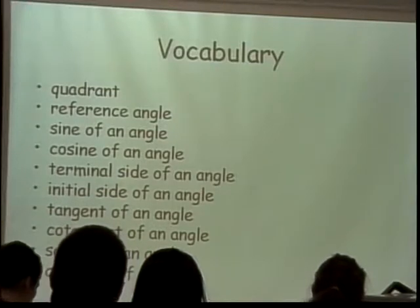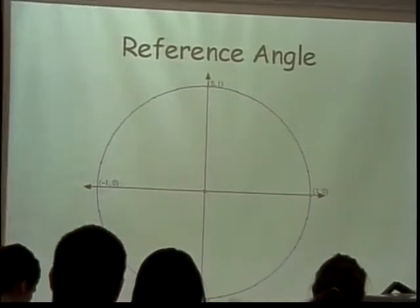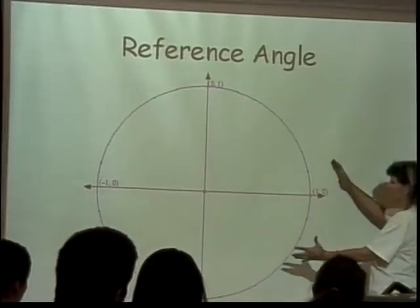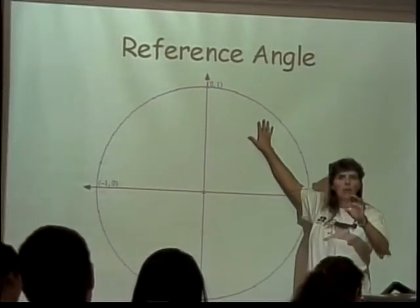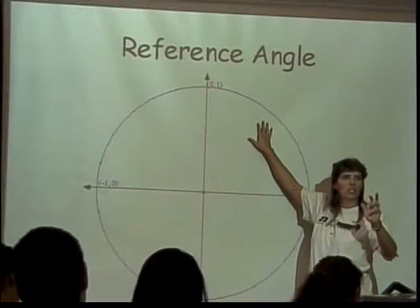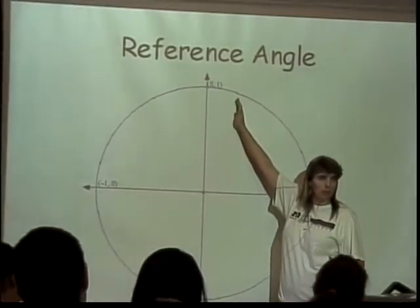So we know the quadrants, yes? So let's start with what's a reference angle. Here is my unit circle. This is quadrant 1. We already know how to find the sine, cosine, tangent, cotangent, secant, and cosecant of π over 6, π over 4, and π over 3.